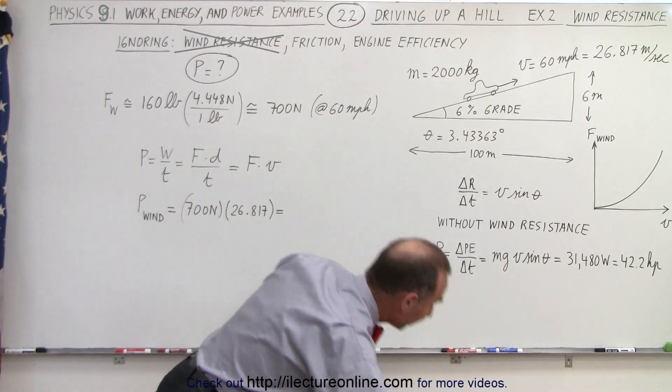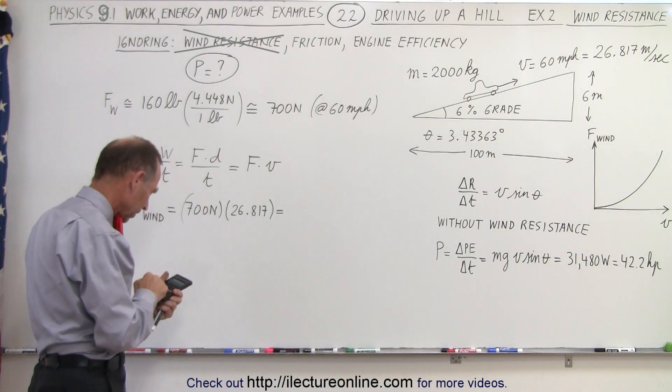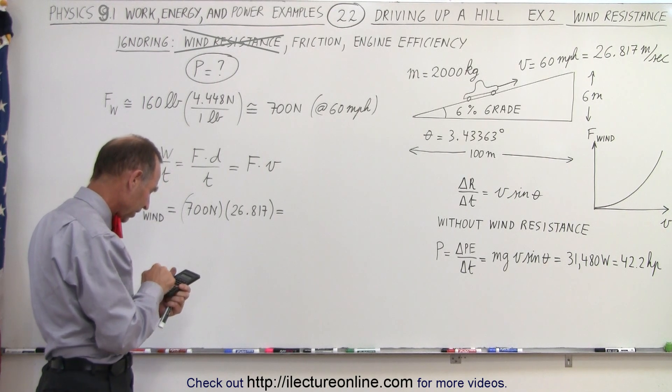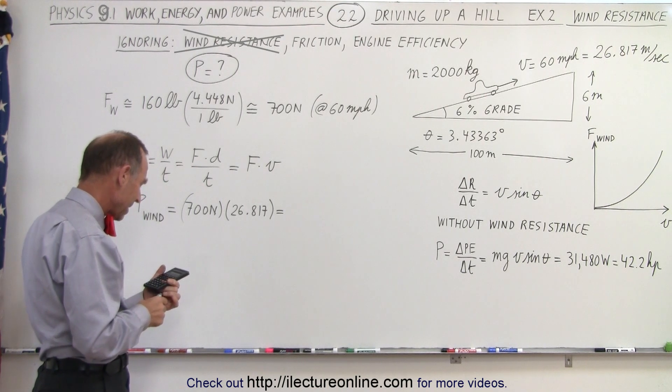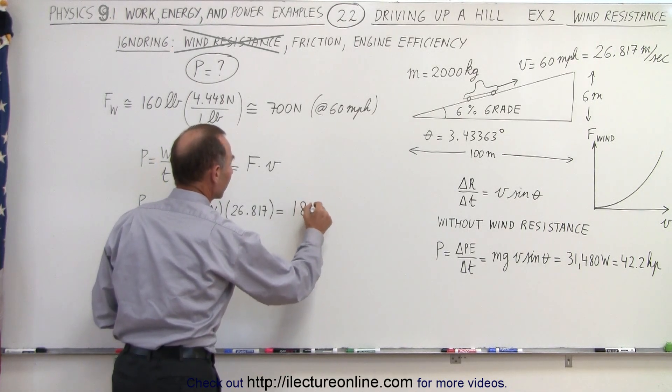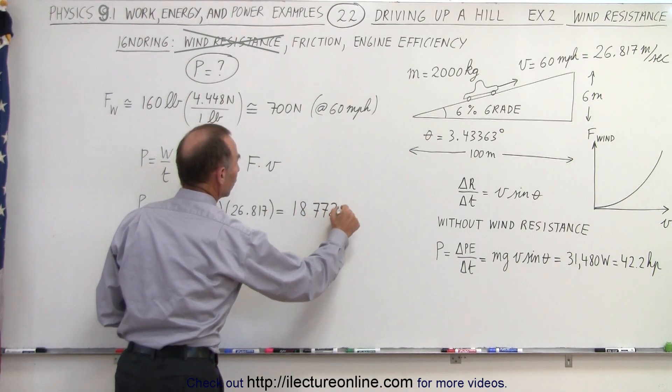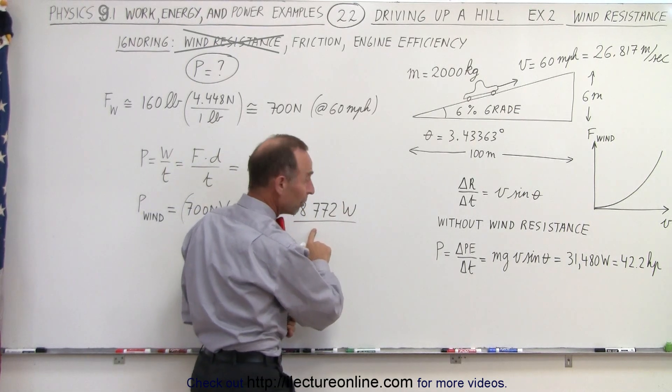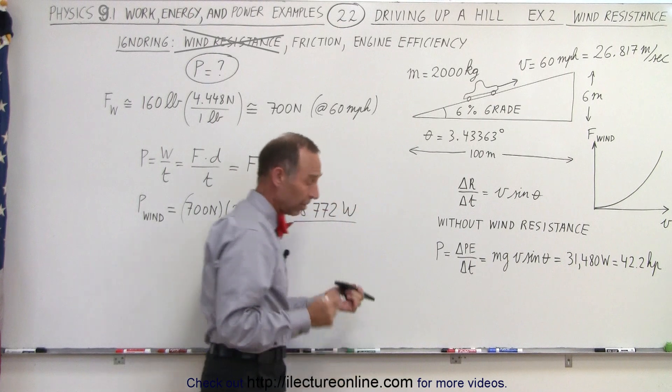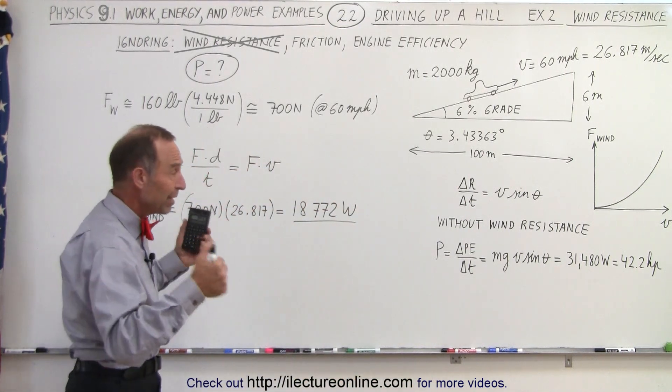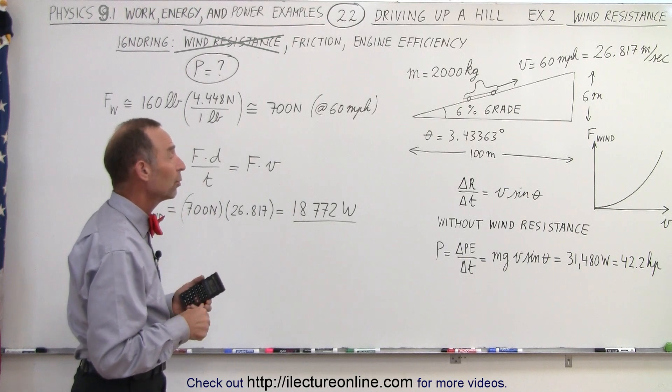So, how many watts is that? It's 700 times 26.817, and that's about 18,772 watts. Now notice, that is almost, well, that's actually more than 50 percent the energy required to drive up the hill. So it adds another big factor, overcoming wind resistance as well.